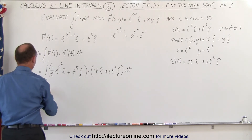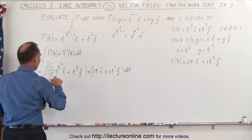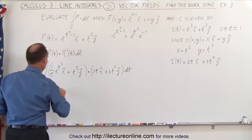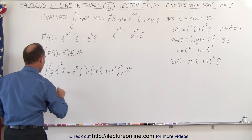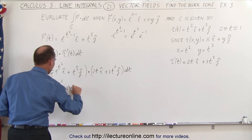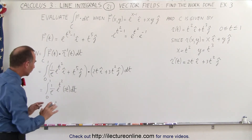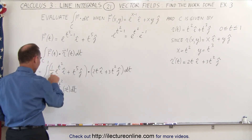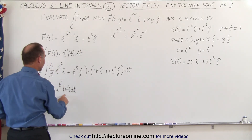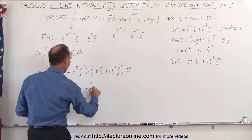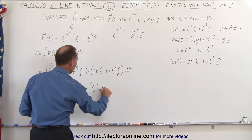This becomes the integral from 0 to 1 of: multiplying the i components gives 1 over e times e to the t squared times 2t dt. I'm going to separate these into two integrals to make it easier to see. So we have 1 over e — a constant that could be taken outside the integral — times the integral of e to the t squared times 2t dt, plus 3 times the integral from 0 to 1 of t to the seventh dt.